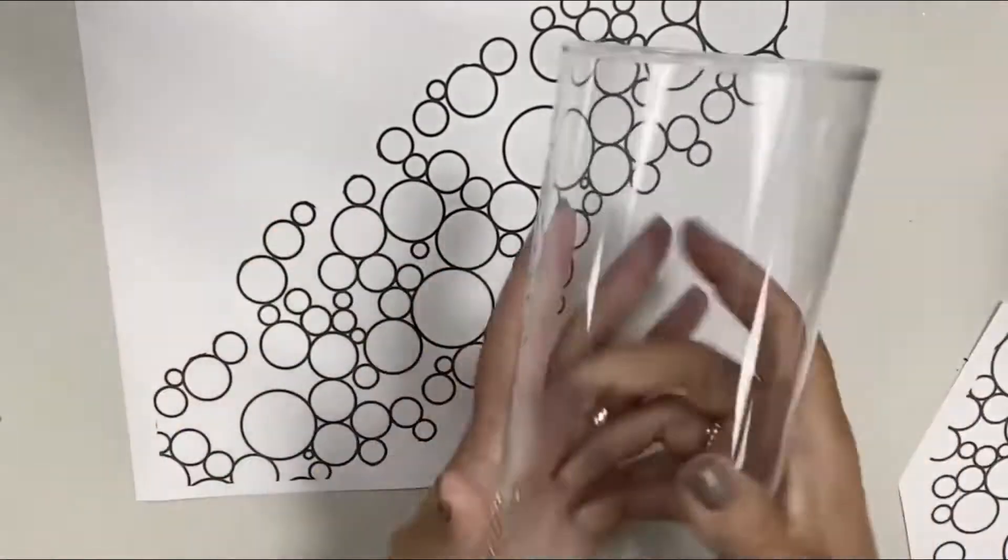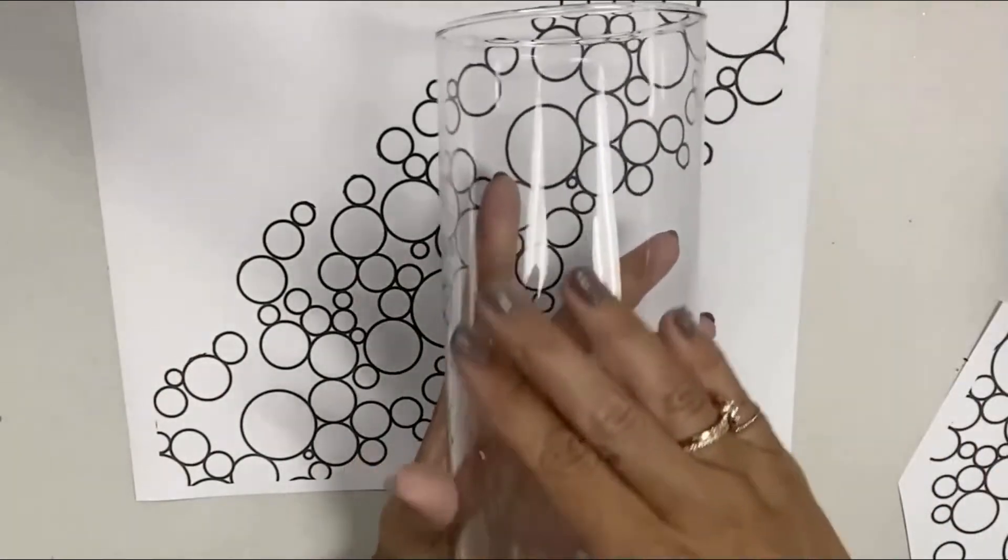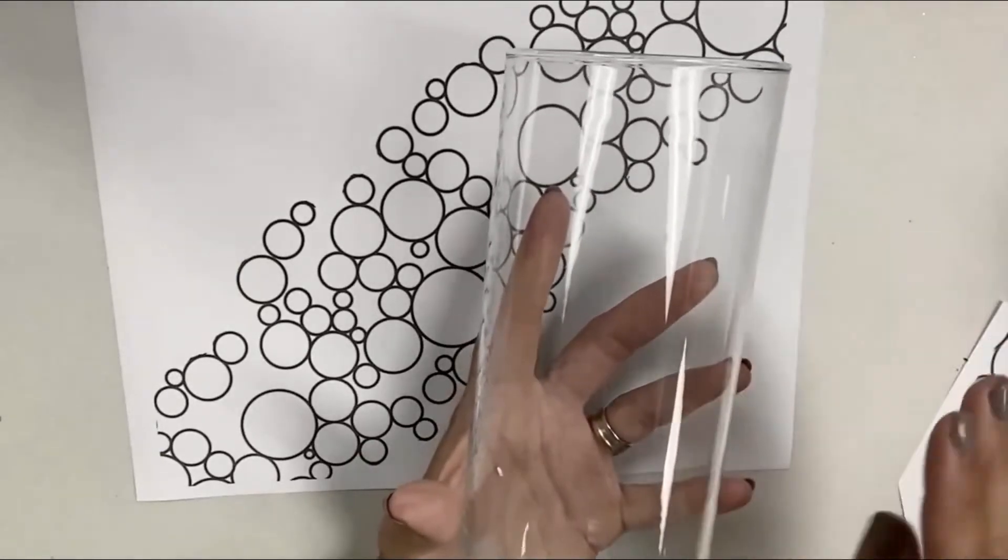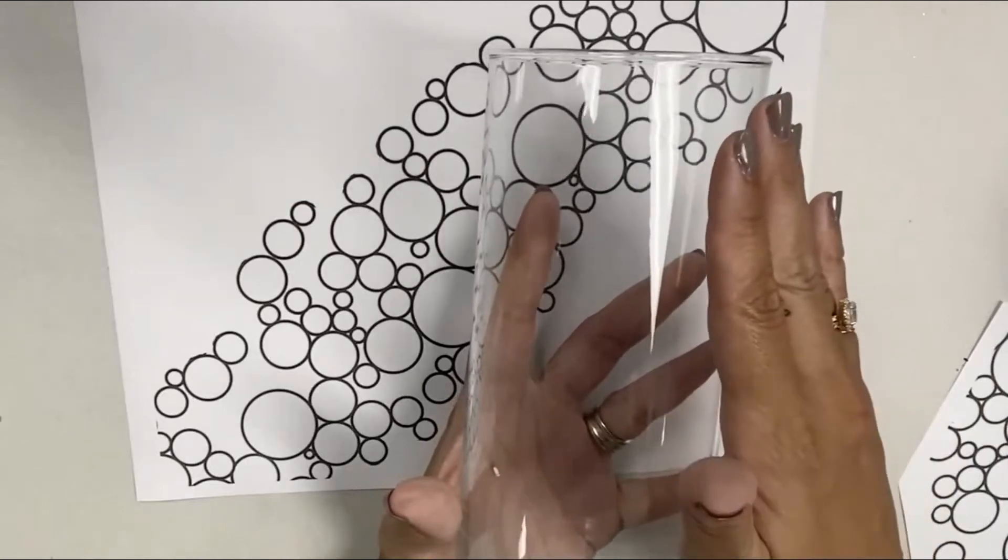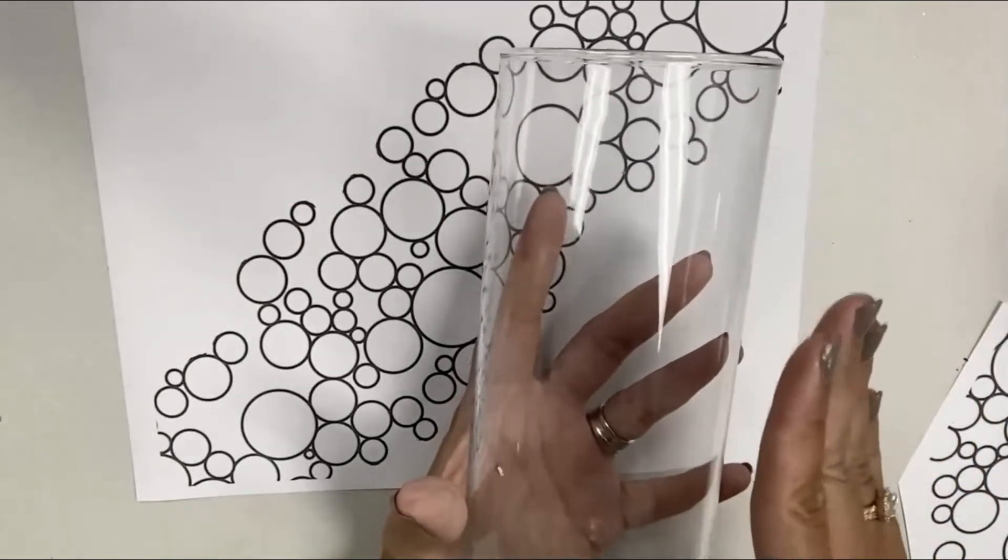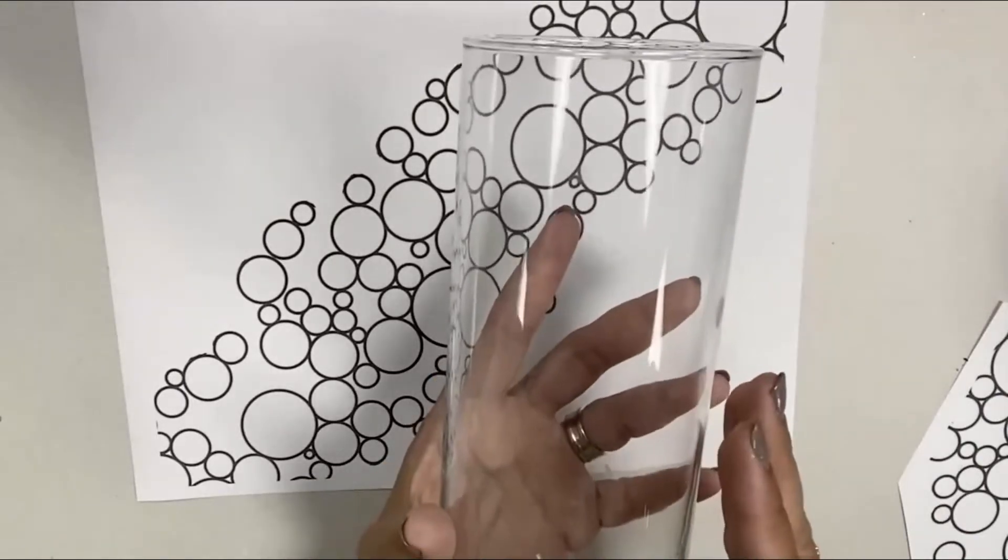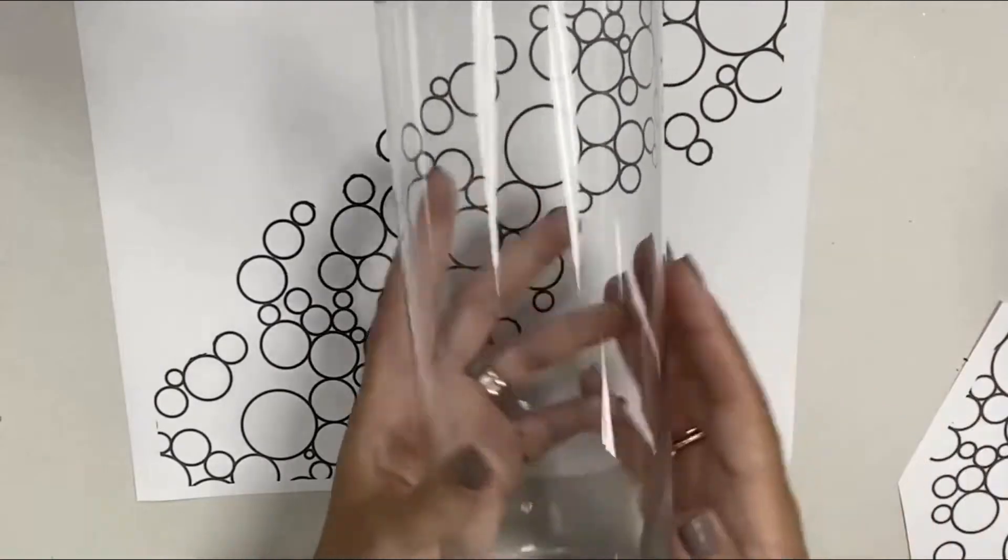And I also have a glass vase that is a cylinder. These tend to work best, especially for glass etching and glass painting, because they don't have texture and they don't have a curve to them. So they're the same size all the way around—it's a cylinder.